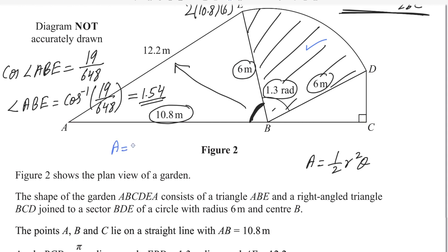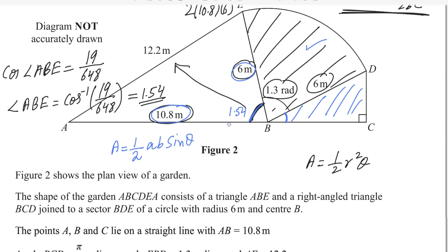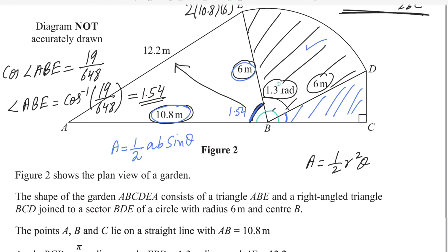The area of a triangle formula is 1/2 × a × b × sin(θ), where a and b are the adjacent sides containing angle θ. We already found angle ABE = 1.54. To find the area of triangle ABE, we use sides 10.8 and 6 with this angle. For the right triangle BCD, we need to find angle DBC. The straight line means the total angle is π, and the two known angles are 1.3 and 1.54.